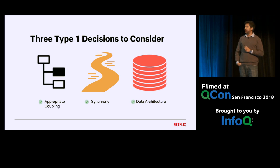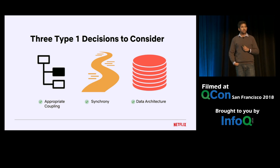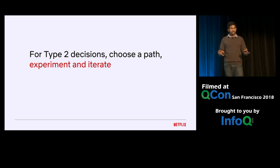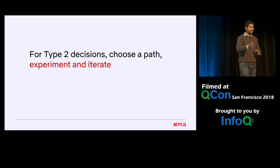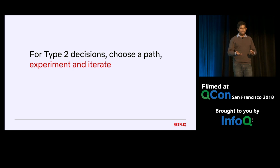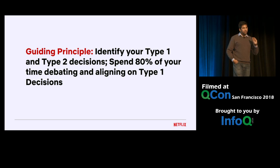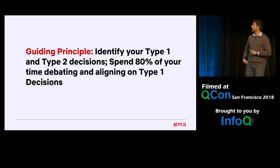That brings us to the close of all three type one decisions necessary to build architecture from fresh. For type two decisions, we suggest: choose a path, experiment, and iterate. For instance, within the play API we had around 20 APIs to implement. We implemented one API, figured out the integration pattern with clients, figured out our migration strategy, figured out our shadow testing strategy, learned from that, and then moved on to the other APIs. The guiding principle: identify what makes a type one versus type two decision for your use case, and among the type one decisions, spend 80% of the time debating on those choices.